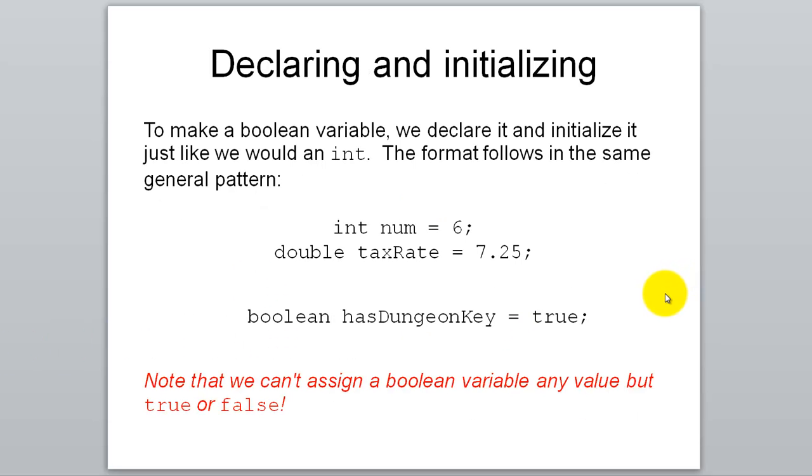Just like with integers and doubles, you can declare and initialize Booleans. Here's how you do it with an integer. Here's how you do it with a double. And you do it very similarly with a Boolean. You say your data type Boolean. You give it a variable name. I called mine hasDungeonKey. And then you give it a value. I'm going to give mine the value of true. You can only put true or false here. So if you had a game where you were doing a dungeon crawl game and there's a dungeon key that you're supposed to find, you could have a variable called hasDungeonKey and you could set that to false. And then whenever the player finds the key, you set it to true. And it's a way of keeping track as to whether or not the player has found the key or not. That's one of the more common uses for a Boolean variable. It lets you know if something has happened in your program or not.